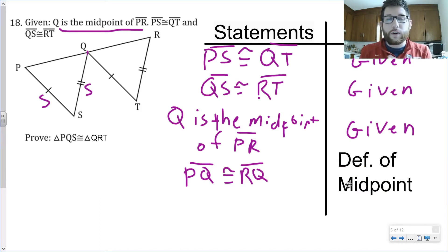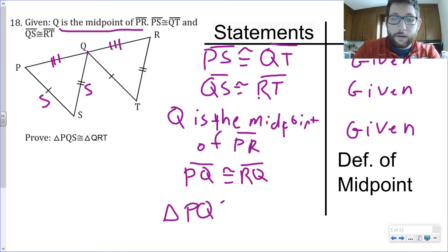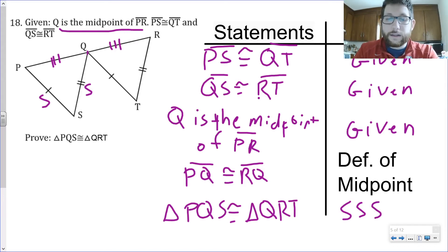So this is a new thing. In the past, we just looked at given, reflexive, vertical. We're going to add three more today: definition of midpoint, definition of bisector, and then alternate interior angles. So that tells me that these sides are congruent. And then how do I know that triangle PQS is congruent to triangle QRT? I know that by SSS. And we're done with our proof.